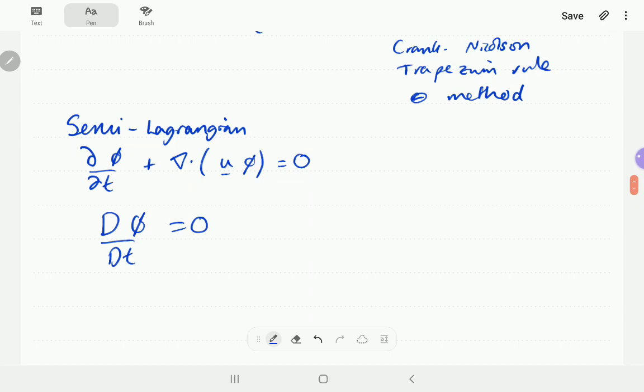And this total derivative, d, is just defined as the partial derivative in time plus the advection term. No, it is defined as the advective form, so it's u dot grad phi is equal to 0. And if the velocity is divergence-free, those are the same.